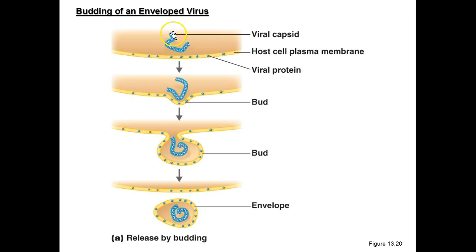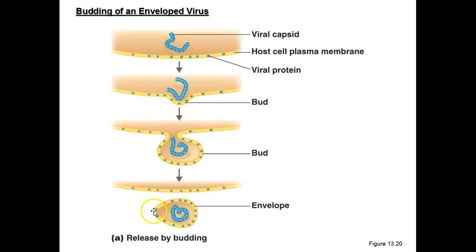Once inside, the virus makes a factory to produce more of itself — the proteins, the genetic material, everything. When it's ready to leave, it wants to leave in a way that tricks other cells into thinking it's friendly. The host cell, that liver cell in our example, has sugars on its surface that say 'I'm a liver cell, don't attack me.' So when the virus pushes its way out, it leaves with a little bit of coating from that liver cell — almost like a coat — to hide itself.